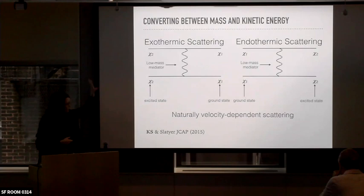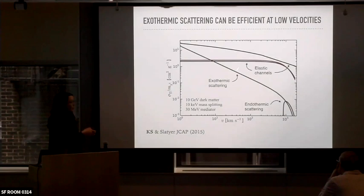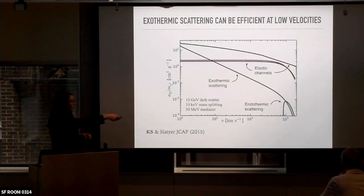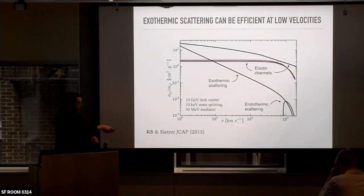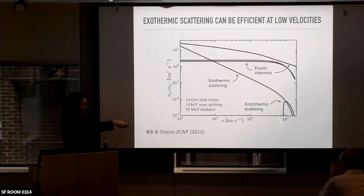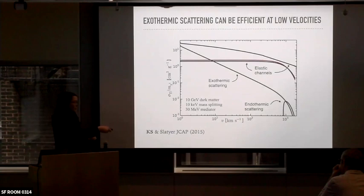We studied what would happen in this kind of situation. Looking at the velocity-dependent cross sections: the elastic scattering channels ground-to-ground and excited-to-excited show enhanced behavior, and the exothermic channel shows a huge enhancement at lower velocities. For this choice of parameters, endothermic scattering is less important because very few dark matter particles have sufficient energy to upscatter and convert kinetic energy into mass — but exothermic scattering is quite important.